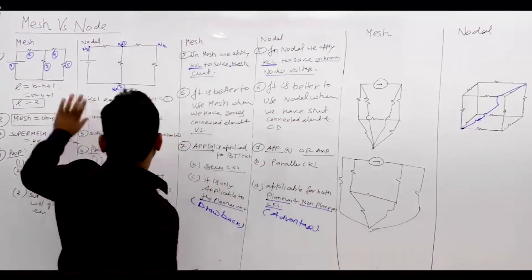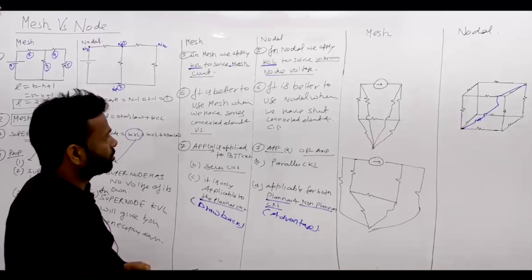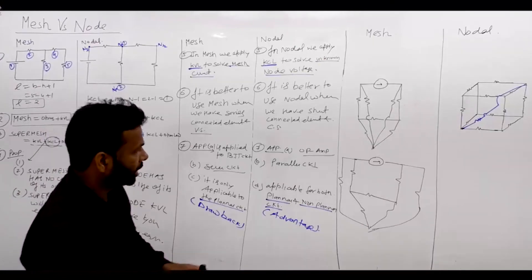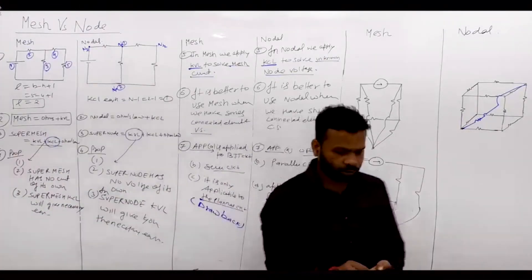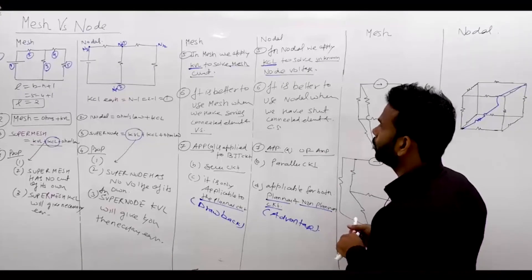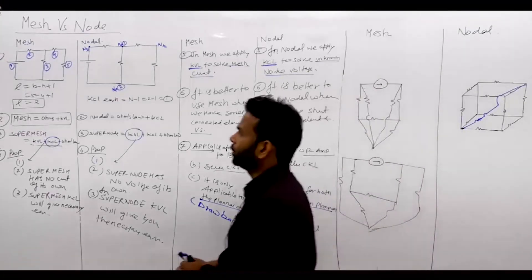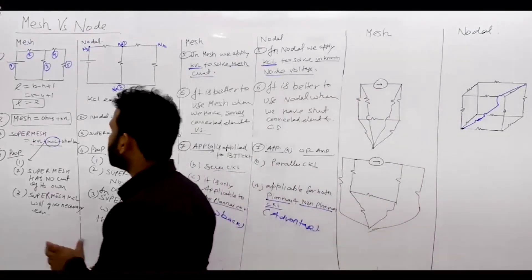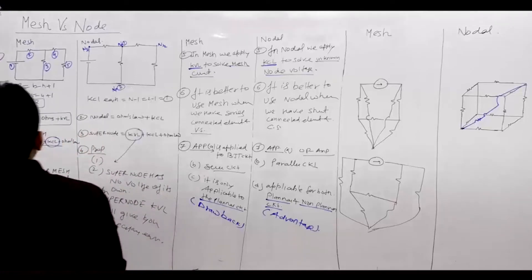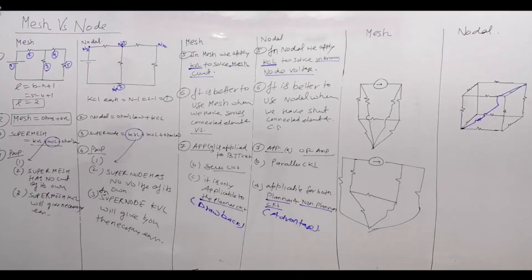So this is the difference between nodal and mesh analysis. The number of mesh equations is L = B − N + 1, and the number of nodal equations is N − 1.